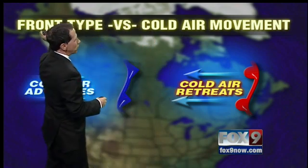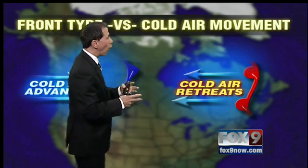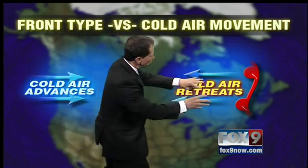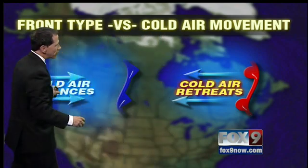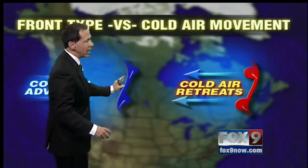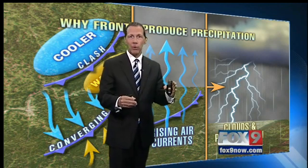You can see part of this map — this is called the front type versus the cold air movement. If the cold air is retreating, it is a warm front, so the leading edge of warmer air is moving on in. If the cold air is advancing, you have a cold front. Basically, air masses are moving back and forth, with a front being the dividing line between them.